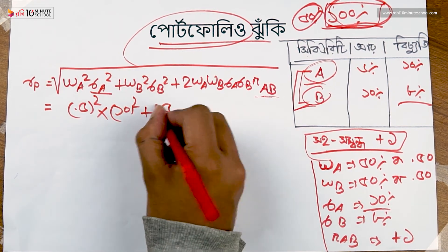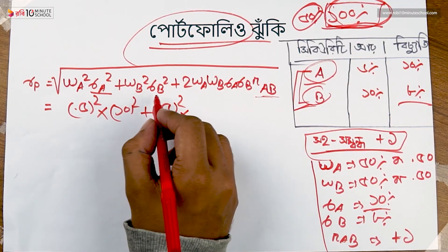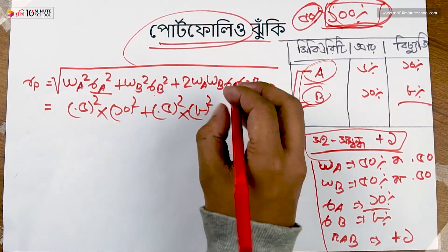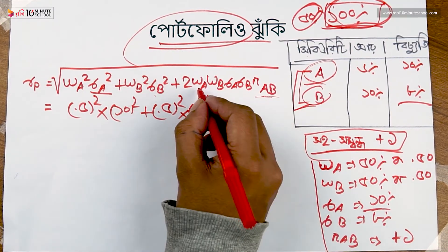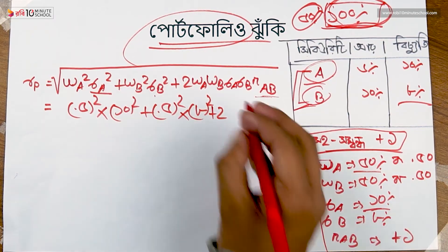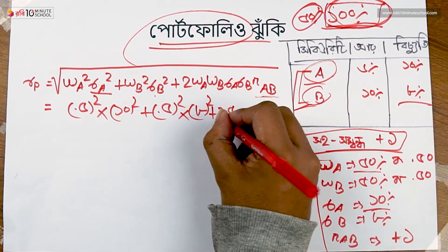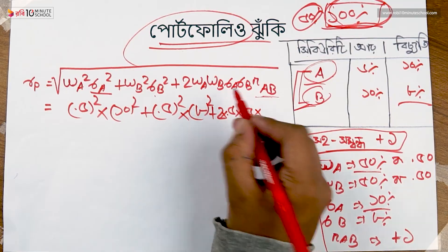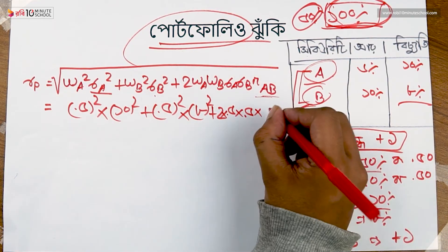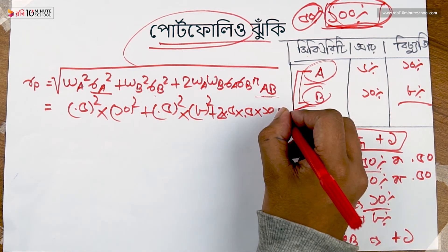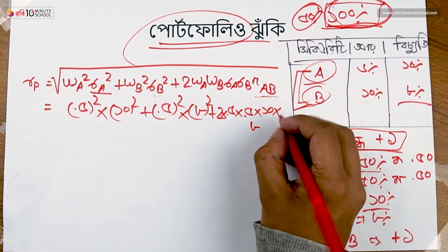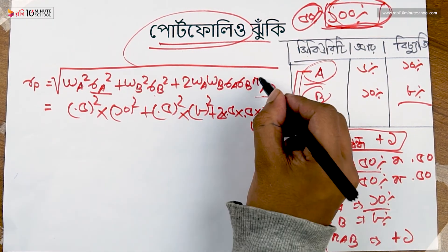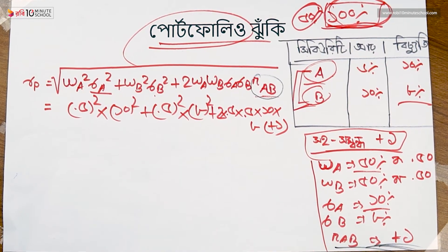So: w_a squared times sigma_a squared, plus w_b squared times sigma_b squared, plus two times w_a (0.5) times w_b (0.5) times sigma_a (10%) times sigma_b (8%), times the correlation plus one. The correlation r_ab equals one, so plus one.